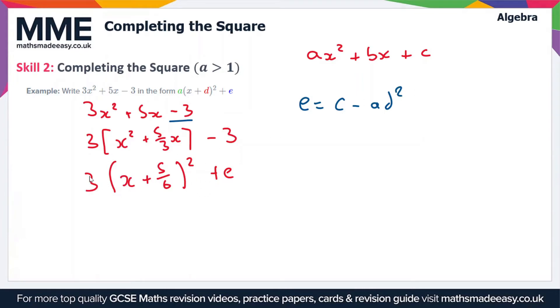So a·d² is going to be equal to 3, which is a, times d² which is 5 over 6 squared. So we can do that expansion just for that one term: 3 times 5 over 6 times 5 over 6. This is going to be equal to 3 times 25 over 36.